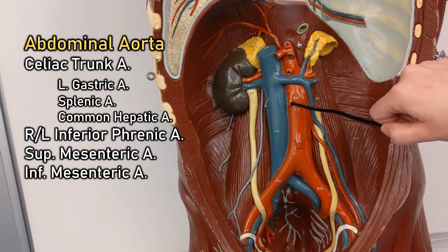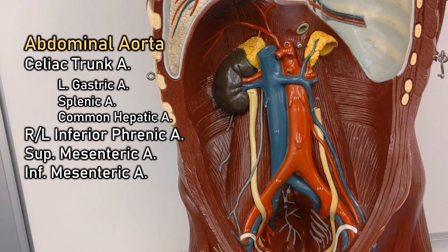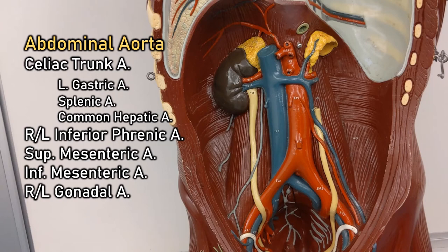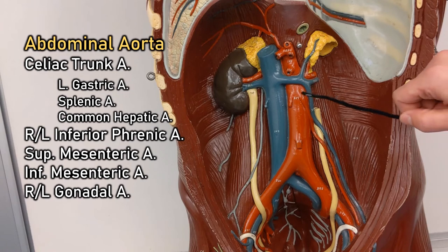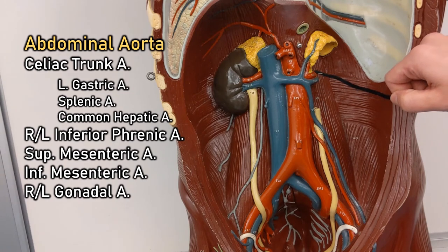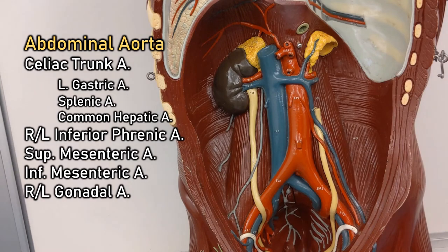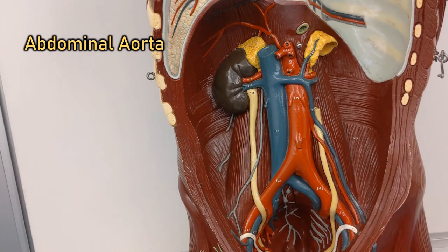Going back to those two in the middle — those are your right and left gonadal arteries. Remember, gonads would be ovaries or testes, so that's where those arteries are headed. And then the right and left renal arteries are here as well.